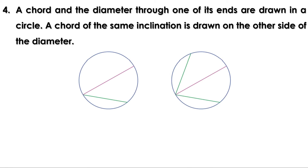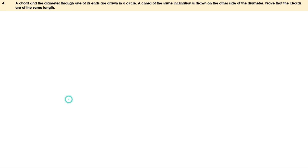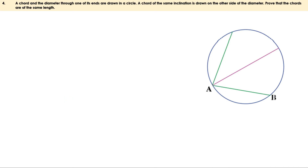Next problem: A chord and the diameter through one of its ends are drawn in a circle. A chord of the same inclination is drawn on the other side of the diameter. Prove that the chords are of the same length. Let the chords be AB and AC and the diameter be AD. The inclination of this chord is the same as the inclination of the other chord, meaning these two angles are equal. This is the same as the previous problem — the only difference is that the measurements of the angles are not given, but they are stated to be equal.